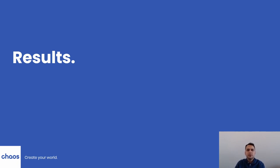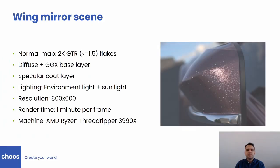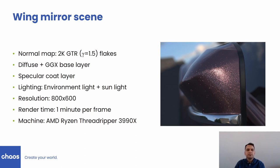We demonstrate our method in two V-Ray scenes and compare it to the current state of the art in two Mitsuba scenes. Our first scene is the wing mirror, where a flake layer is modeled with a 2K normal map. Flake orientations are sampled from a GTR distribution; GTR gamma 1.5 results in heavier tails compared to GGX distribution. We show equal-time comparisons between stochastic sampling and our filtering method, demonstrating that filtering is beneficial across a range of Beckmann roughness values and not only for specular materials. As the roughness increases, the benefit of our method diminishes.